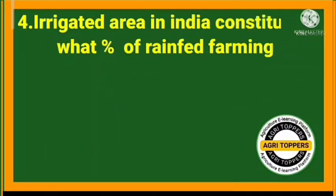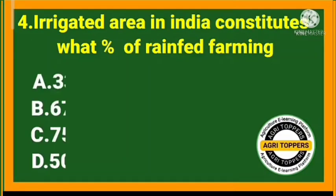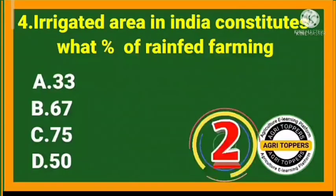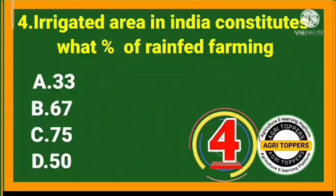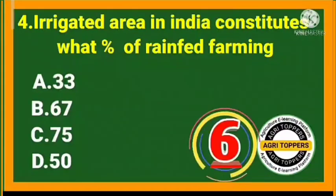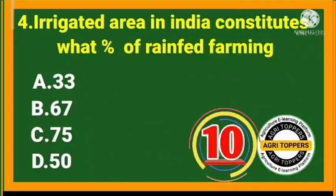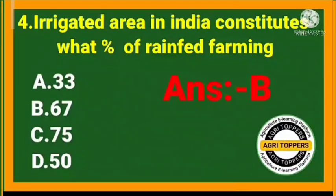Fourth question: irrigated area in India constitutes what percentage of rainfed farming? The answer is 67 percent.